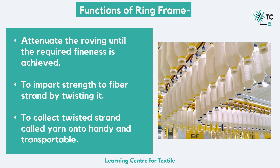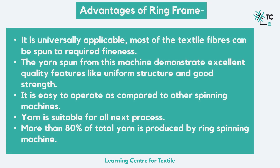The image to the right shows how roving bobbins look like. These are drafted and twisted in the ring frame to form a yarn of a required count. Why is it the most widely used spinning technology? Number one, it is universally applicable — most textile fibers can be spun into the required fineness. Secondly, the yarn spun from this machine can demonstrate excellent quality features, like a uniform structure and good strength. Thirdly, it is easy to operate as compared to other spinning machines. The yarn is also suitable for all the next processes. And more than 80% of the total yarn produced in textile mills is produced by ring spinning machines.